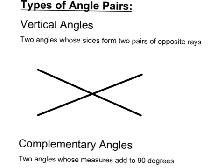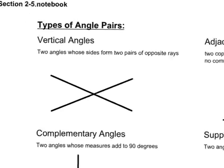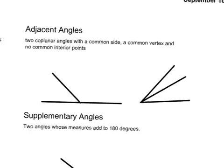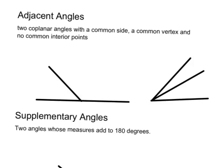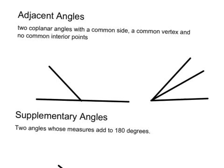The next type of angles we want to look at are adjacent angles. And adjacent angles are two coplanar angles with a common side, a common vertex, and no common interior points. So, we have angle one here is adjacent to angle two, and also makes up a linear pair. Angle one here is adjacent to angle two, but does not make up a linear pair, as we learned about in our other previous definitions.